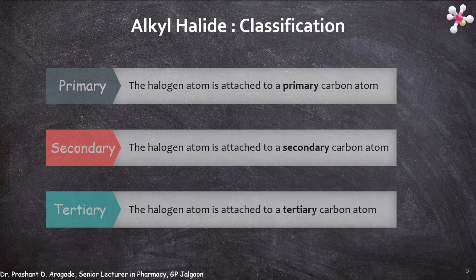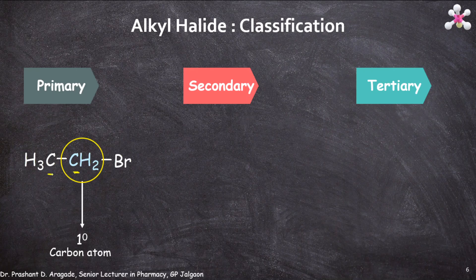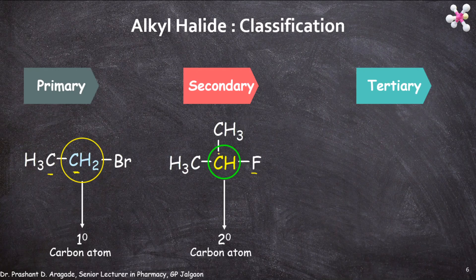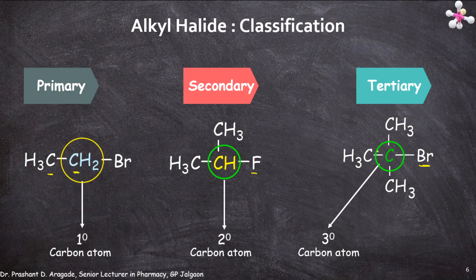In primary alkyl halides, the halogen atom is attached to a primary carbon atom. A primary carbon atom is attached to only one other carbon atom. In secondary alkyl halides, the halogen atom is attached to a secondary carbon atom, which is attached to two other carbon atoms. Similarly, in tertiary alkyl halides, the halogen atom is attached to a tertiary carbon atom, which is attached to three other carbon atoms.